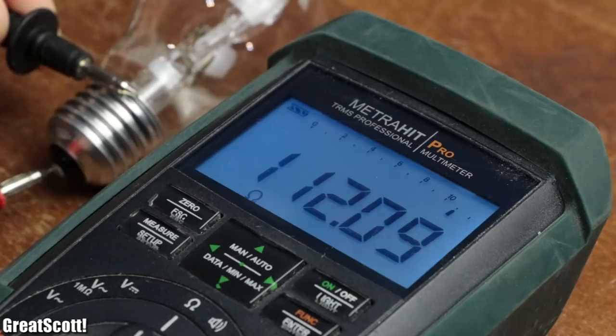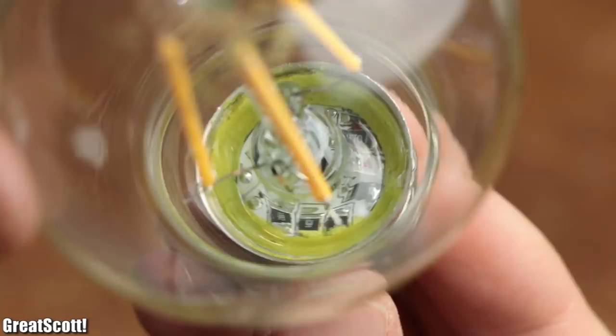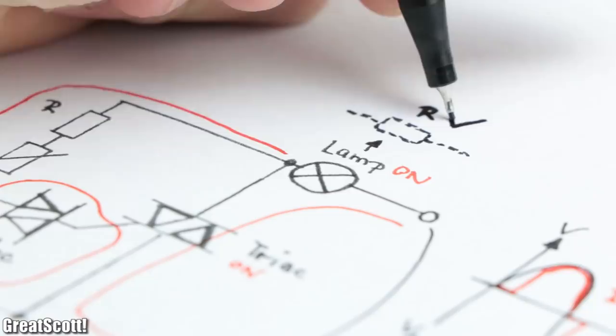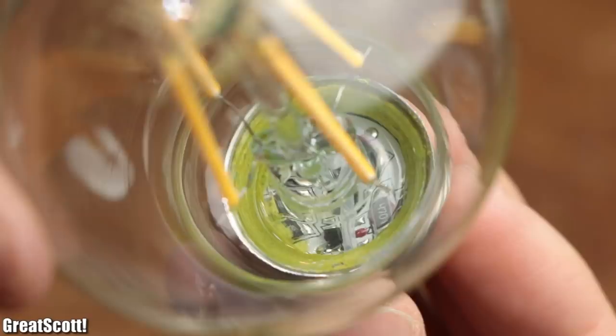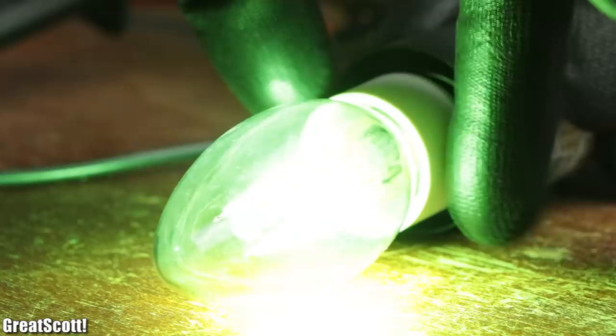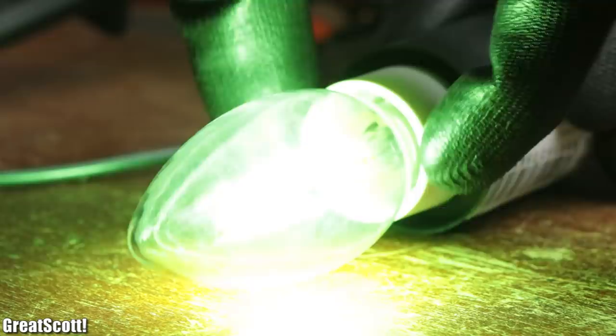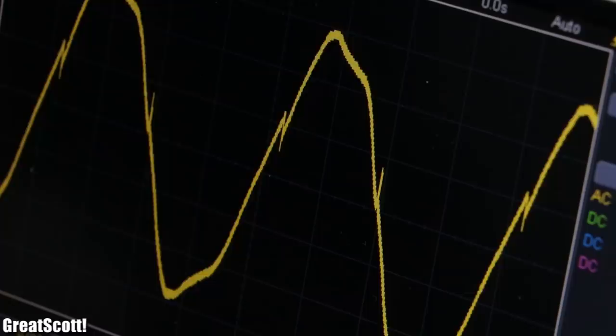For such a halogen light bulb which can be modeled as a resistor such a dimmer circuit is definitely suitable. But for an LED light bulb which comes with capacitors, inductors and LED drivers such a circuit is often times not suitable. Because the current path goes through the light bulb and thus a more complex load can lead to the malfunction of the analog dimmer.